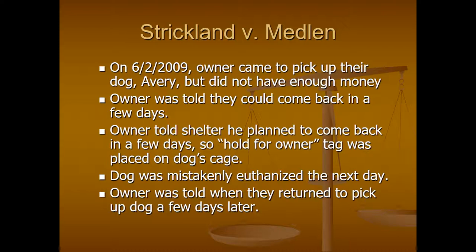In Strickland v. Medlin, in 2009, the owner went to the dog shelter in Fort Worth to pick up their dog Avery, but the owner didn't have enough money on them to pick the dog up right then. The employee told the owner they could come back in a few days. The shelter placed a 'hold for owner' tag on the dog's cage, but unfortunately the shelter made a mistake and euthanized the dog the next day. They also failed to contact the owner, waiting until the owner came back a few days later with the money to pick up Avery — obviously a shock to the owner.